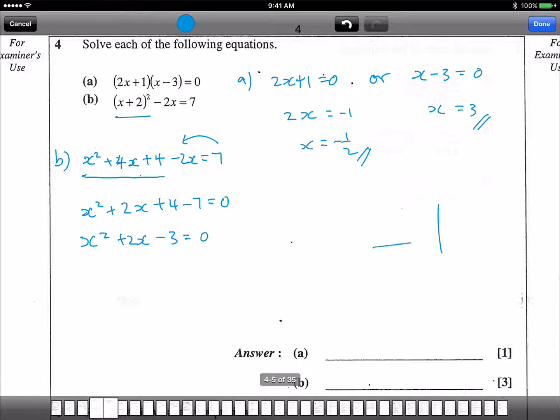x times x, so 1 plus 2x, 3 and 1. This negative, positive. So factorize is x plus 3, x minus 1, equal to 0. So far okay?